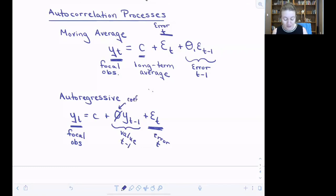This term involves the value at t minus 1 plus a coefficient. There's also a coefficient in the moving average. The difference is that here the value at t minus 1 is being used to predict the value at time t, whereas under a moving average equation, the error at t minus 1 is being used to predict the value of y at time t.